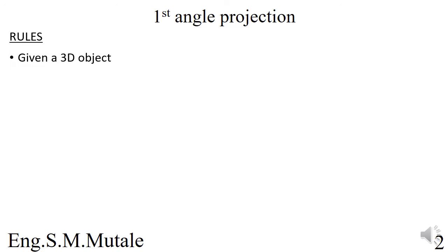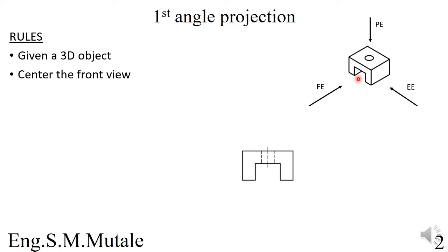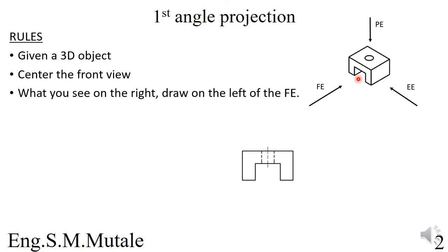Under first angle projection, we abide by certain rules. Given a 3D object, you have the front elevation, the plan elevation (PE), and the end elevation (EE). First, you center the front view. Then, what you see on the right, you draw on the left of the front view. So if the end elevation is seen on the right, when drawing you place it to the left.